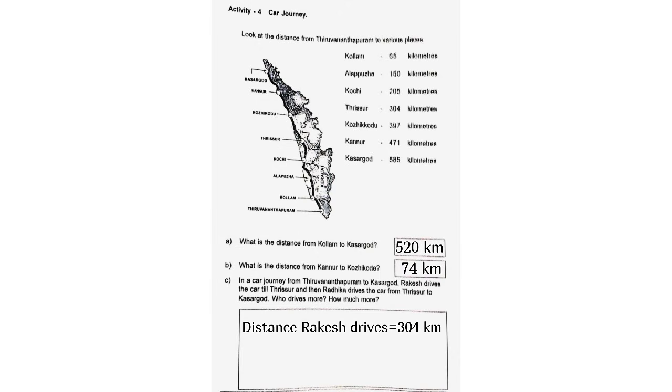C. In a car journey from Thiruvananthapuram to Kasaragod, Rakesh drives the car till Thrissur and then Radhika drives from Thrissur to Kasaragod. Who drives more? How much more? Distance Rakesh drives = 304 km. Distance Radhika drives = 281 km. Rakesh drives more, by 23 km.